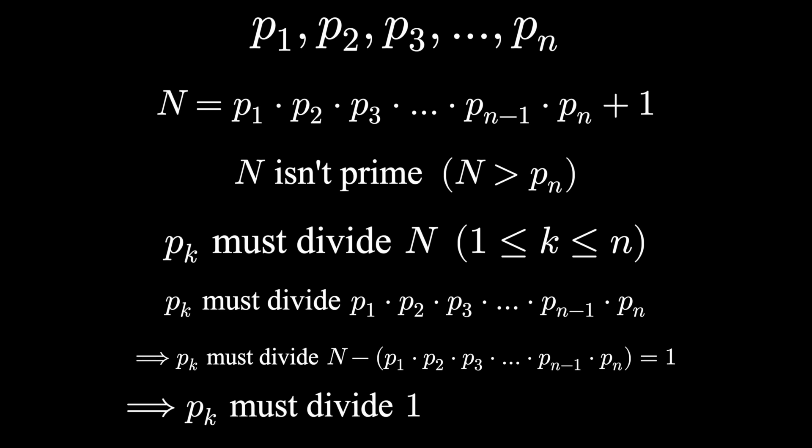But the lowest prime number is 2, and 2 doesn't divide 1. This is impossible, our prime number can't divide 1. We have a contradiction. Hence our assumption that there were a finite number of primes is wrong, and there are indeed an infinite number of primes.